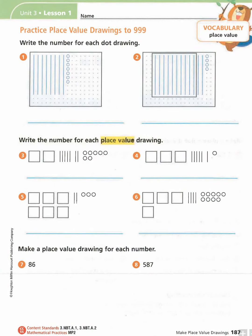This is Math Expressions Unit 3, Lesson 1. We're going to start off by putting your first name, then your class number, and then the date on the name line at the top of the page. Pause the video, go ahead and do that, and then when you're ready to go, start it back up.